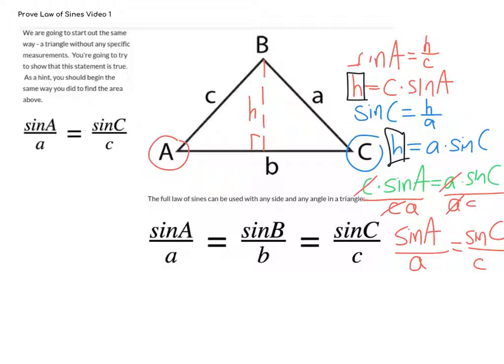At this point, we have shown that two parts of the law of sines work. The third part can be found in a similar fashion. There are some other conditions to show that the law of sines works for all triangles, but this is a good start, and this is enough for our purposes in an algebra two class.